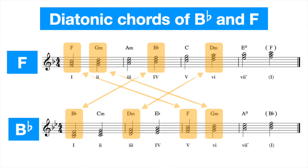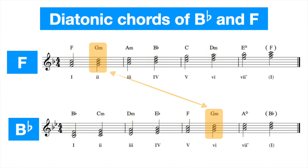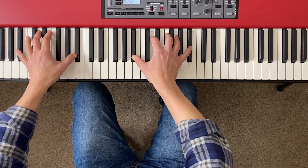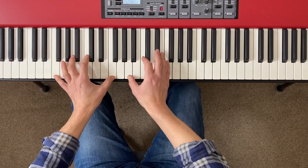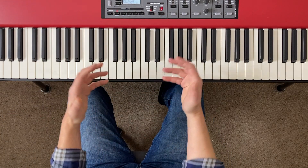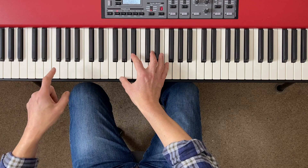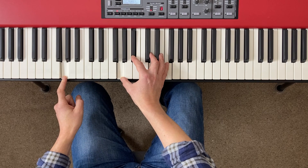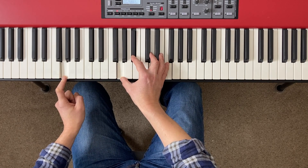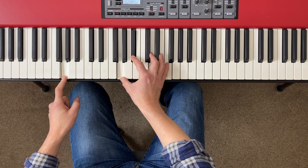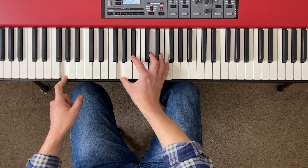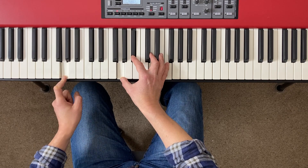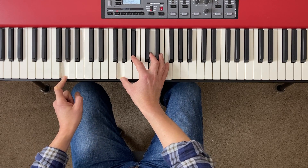These two major keys, because they're a fifth apart and very closely related, have several chords in common, so I'm spoilt for choice. But the one I'm going for to power my modulation is G minor, which I'm extending out to G minor 7. I can start in my key of B flat major and move to the G minor 7 chord — that sounds very natural because it's diatonic to B flat major. It's the number 6 chord in the key of B flat major. But I'm going to stop thinking of it as the number 6 chord in B flat major and start thinking of it as the number 2 chord in F major.